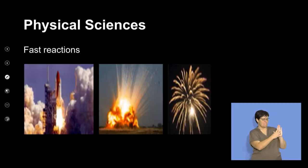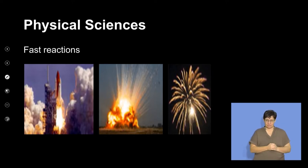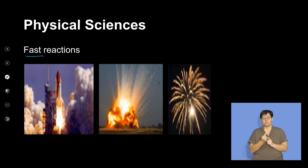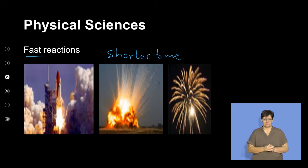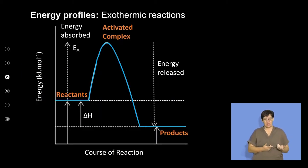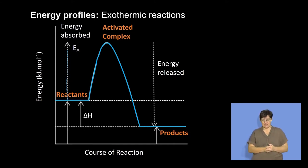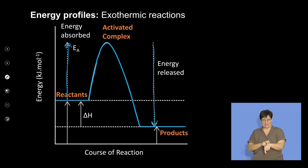Here we have a slide on fast reactions. Looking at these photographs, we can see combustion and explosion. Fast reactions are very quick — they happen over a shorter time. Fast reactions are normally exothermic reactions, where the energy needed to break the bonds is less than the energy that is released during these reactions.